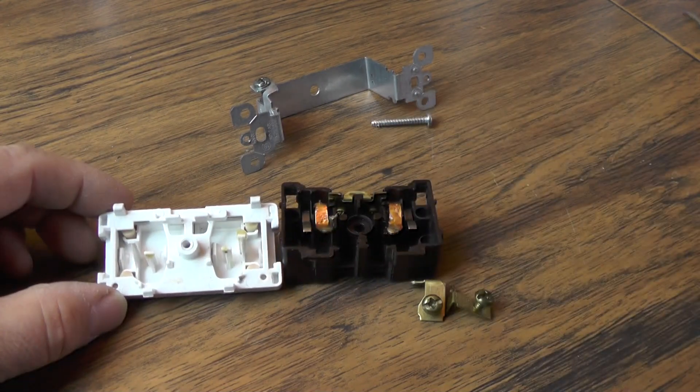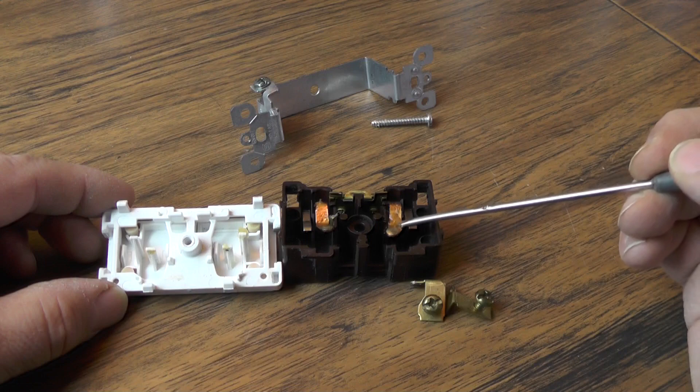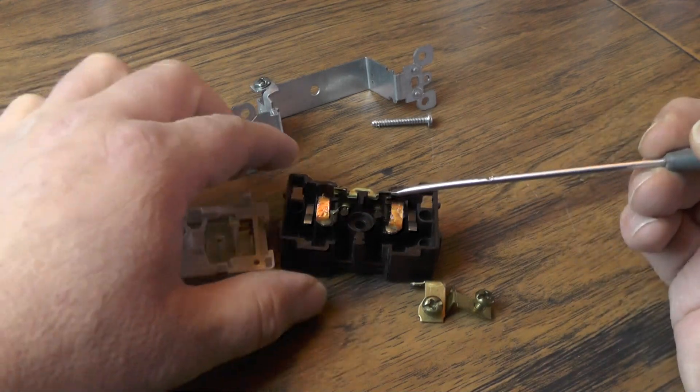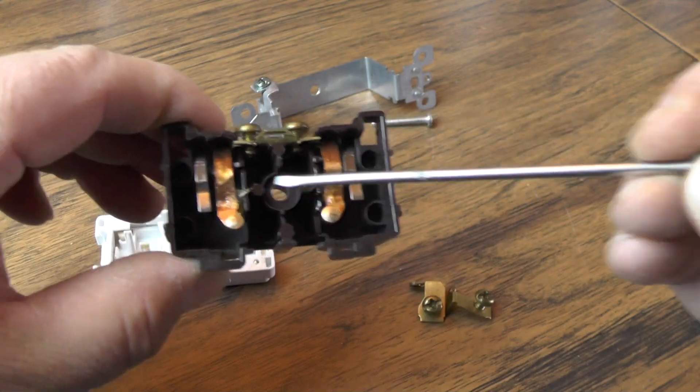And so these two inner tabs actually are what operate the switch. So the switch itself is these two copper tabs, one for each circuit.